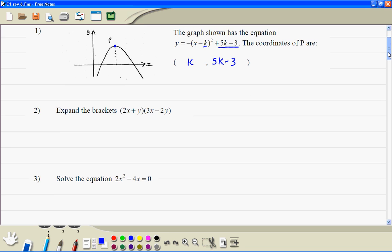Question 2, we're going to expand this bracket. So 2x times 3x, then we have 2x times minus 2y. So we have 2x times 3x is 6x squared, then minus 4xy.